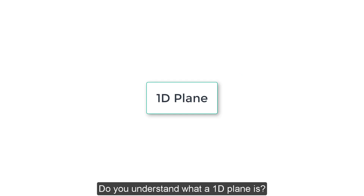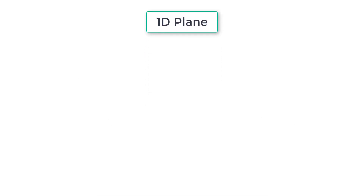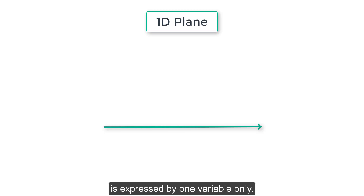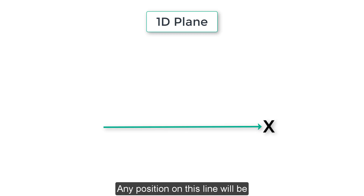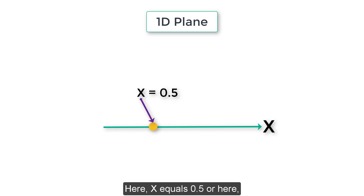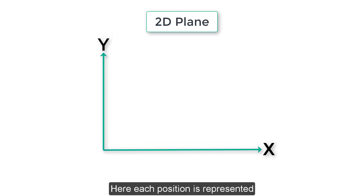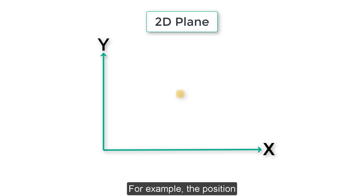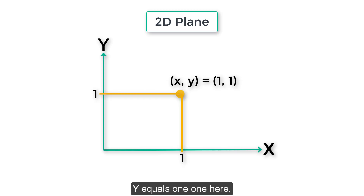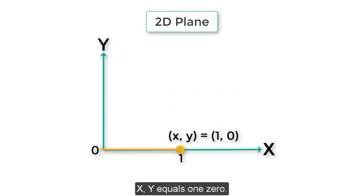Do you understand what a 1D plane is? It is a straight line where each position is expressed by one variable only. For example, on an x-axis, any position on this line is expressed in terms of the x variable - for instance x equals 0.5, or x equals 1, and so on. This is a 2D plane, where each position is represented using two variables, x and y. For example, the position of a point here is (x, y) equals (1, 1), here (1, 0), and here (0, 1).